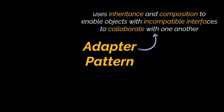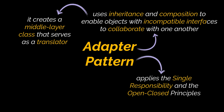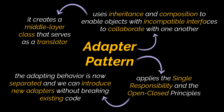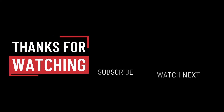To sum up, the adapter design pattern uses inheritance and composition to enable objects with incompatible interfaces to collaborate with one another. It creates a middle layer — a class that serves as a translator between your code and the legacy or third-party class you want to make use of. Additionally, by following the adapter pattern you will be applying the single responsibility and the open-closed principles, because the adapting behavior is now separated in its own class and you have the ability to introduce new types of adapters without breaking the existing client code. That's it for this video, I hope it was helpful — thank you for watching, take care and I'll see you in the next one.